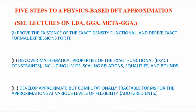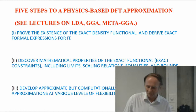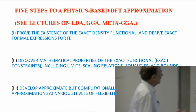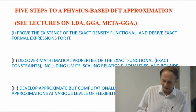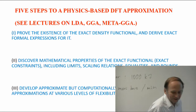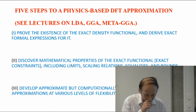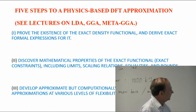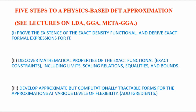Here are the five steps to constructing a physics-based density functional approximation. The first step is to prove the existence of the exact density functional — that's been done by Hohenberg, Kohn, and Sham — and derive some exact formal expression for it that is mathematically useful for deriving properties, such as the constraint search. Then you discover the mathematical properties of the exact functional: the exact constraints including limits, scaling relations, inequalities, bounds, and so on. A lot of that work was done in the 1980s, and I don't think we know all the exact constraints — it would be useful to know more.